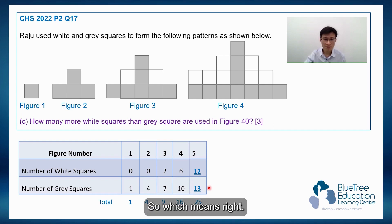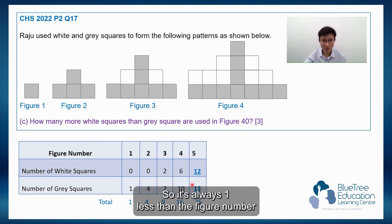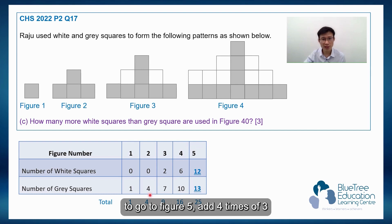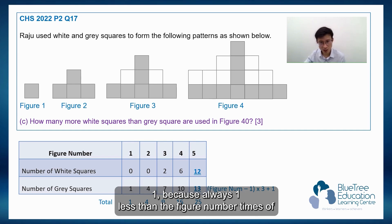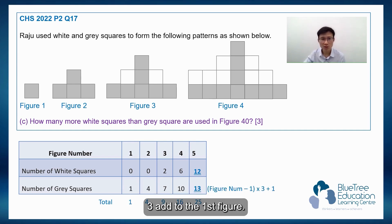So which means, to get to the second figure, I just need to use the first figure which is 1, plus 1 times 3. To get to figure 3, I add 2 times 3. To get to figure 4, I add 3 times 3. So it's always 1 less than the figure number. To go to figure 5, I have to add 4 times 3 to the first figure. So the pattern will be: figure number minus 1, times 3, add to the first figure.